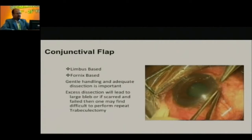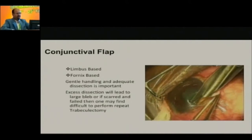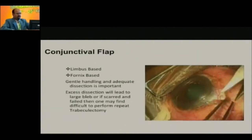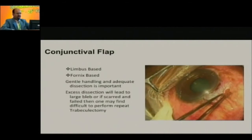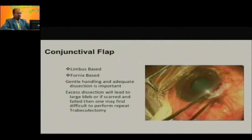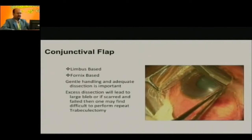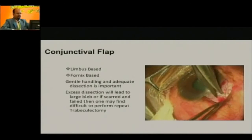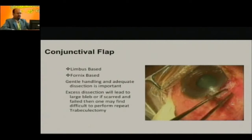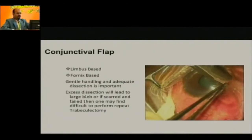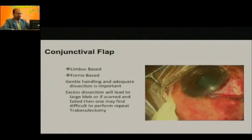For the conjunctival flap, we are very familiar with taking a fornix-based flap. Limbus-based flap some people do, but I usually prefer a fornix-based flap for almost all my surgeries. You must make sure that you cut all the adhesions, as they will induce a lot of fibrosis and scarring. Lift the conjunctival flap nicely and dissect all adhesions on either side. Using the corneal traction suture, you can dissect nicely. Make sure you don't cut the superior rectus, because any vessel that starts bleeding from there can obscure the view.